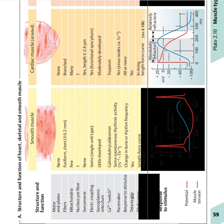For skeletal muscle, the contraction time is much larger compared to the action potential time. The action potential time is very small compared to the contraction time. This implies that another action potential is going to add up to the contraction of a skeletal muscle, and also for smooth muscle. An infinite number of action potentials are going to cause an infinite contraction of the smooth muscle, and that infinite contraction is called tetany.